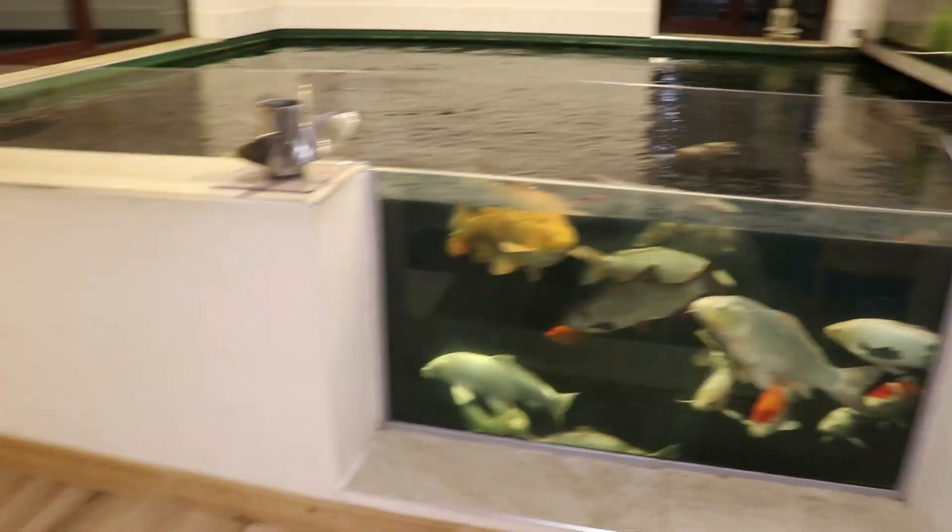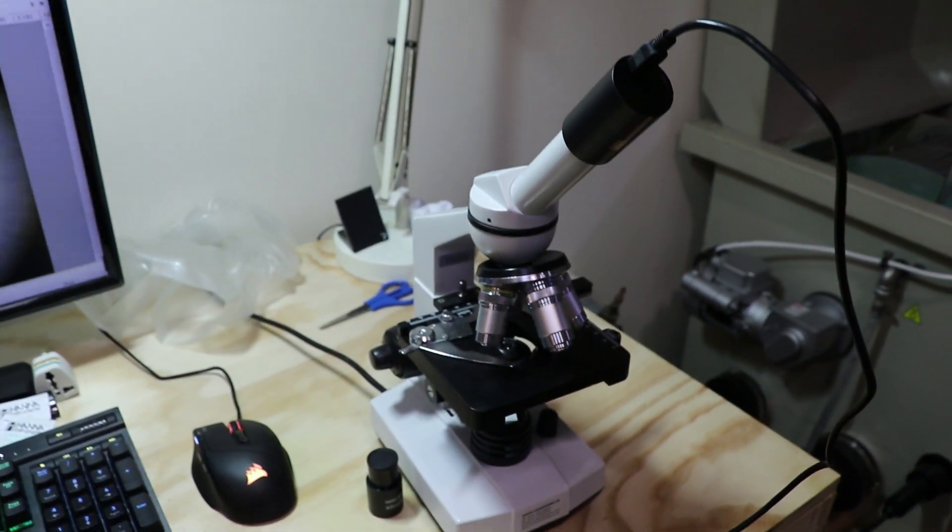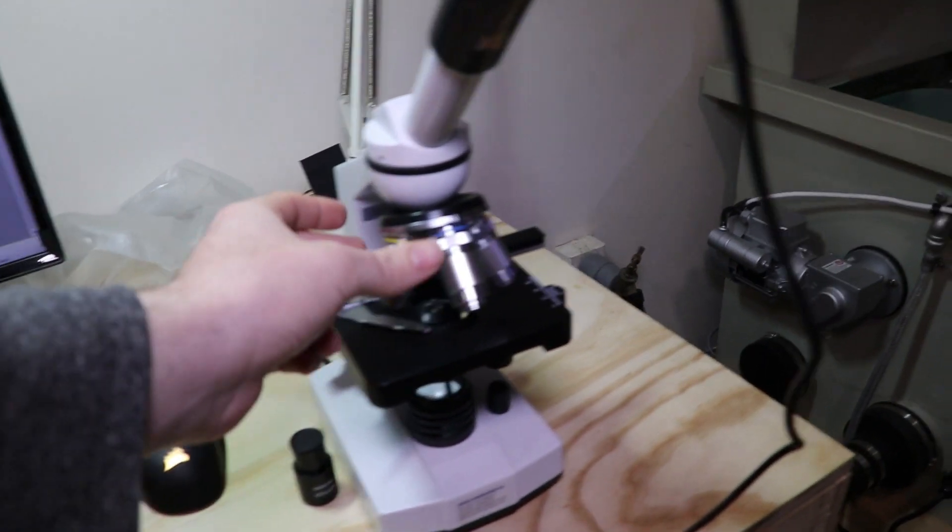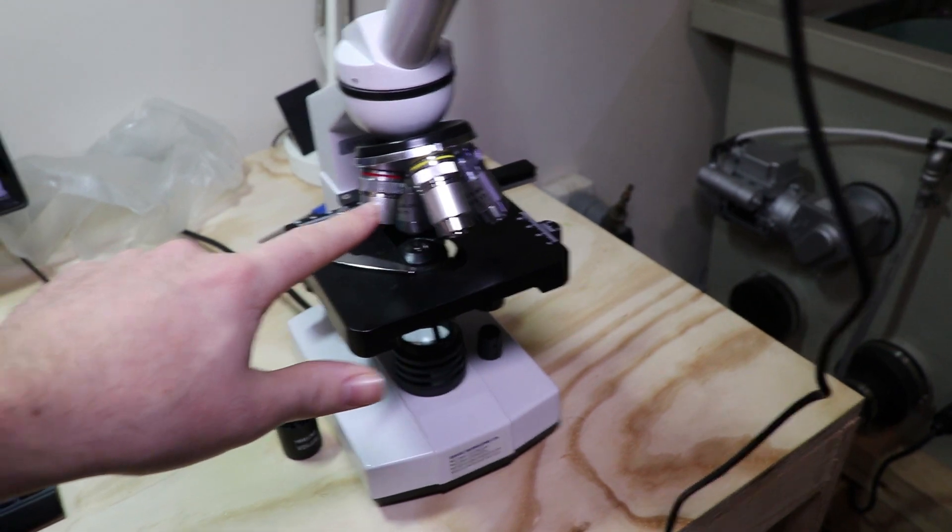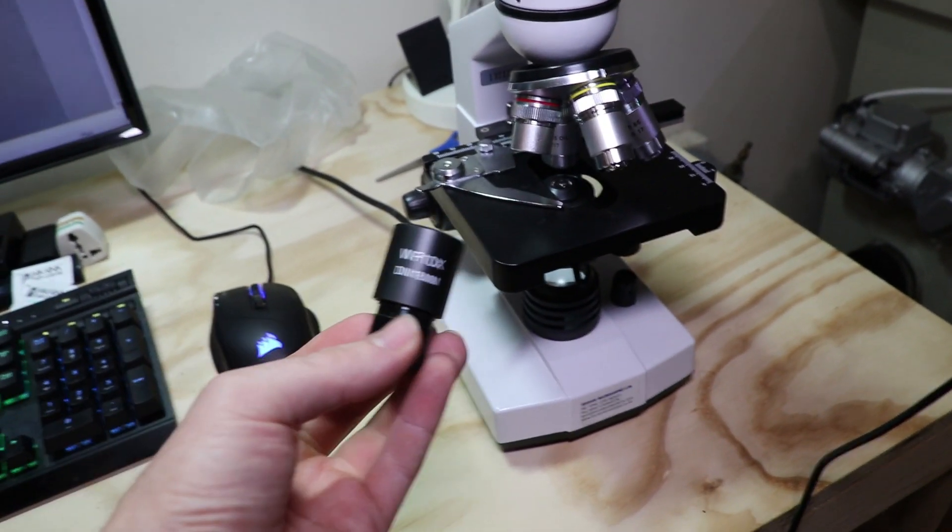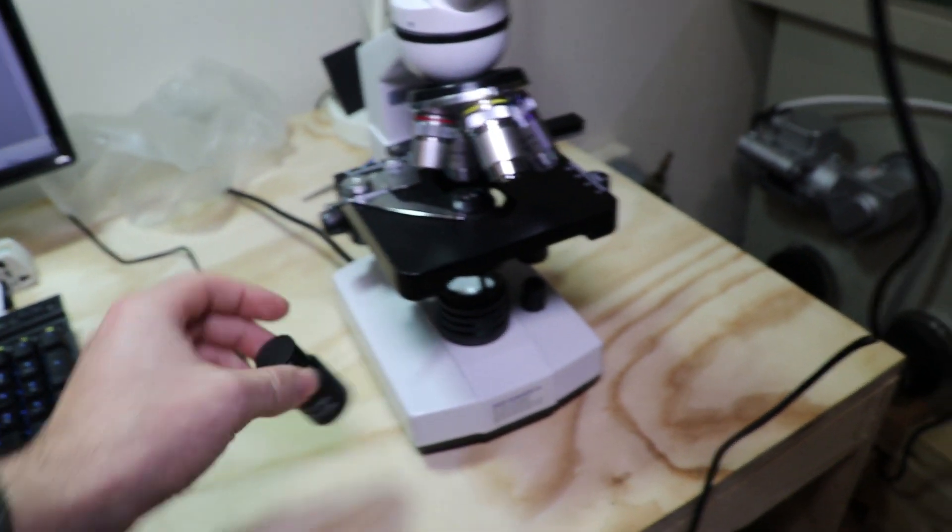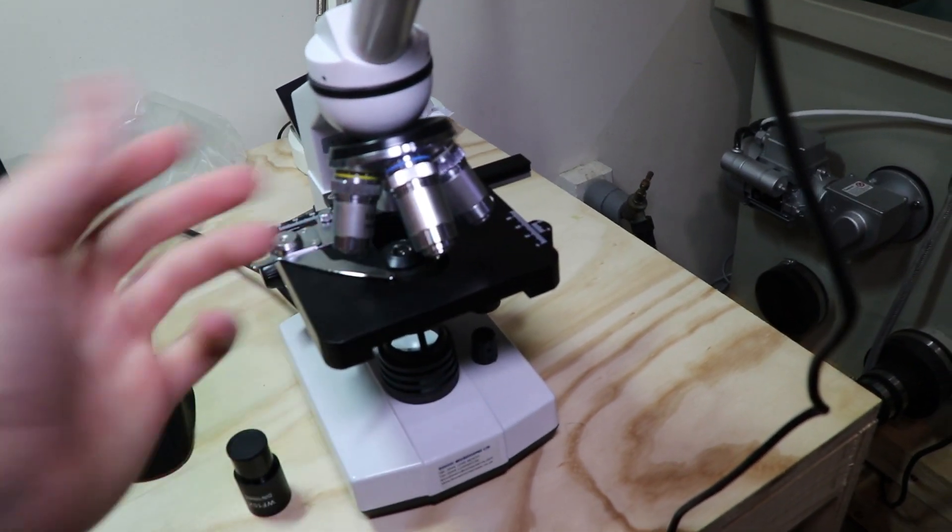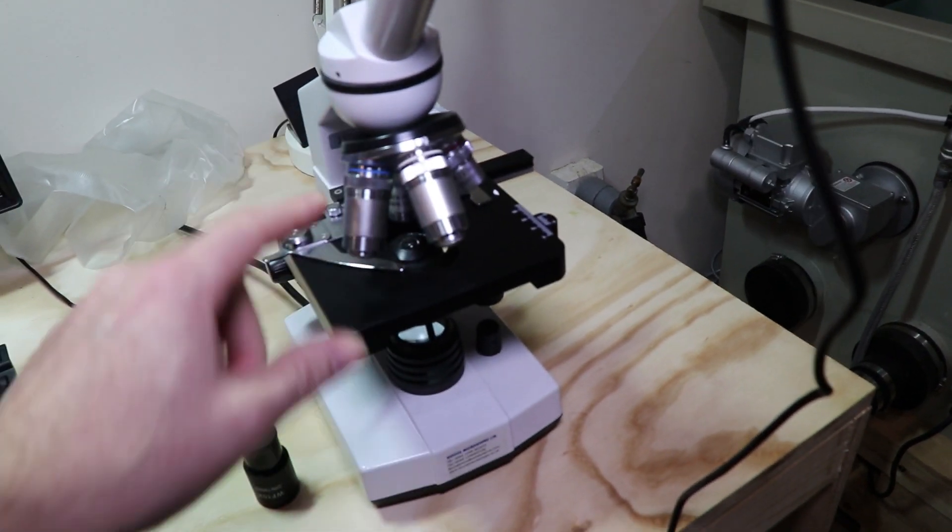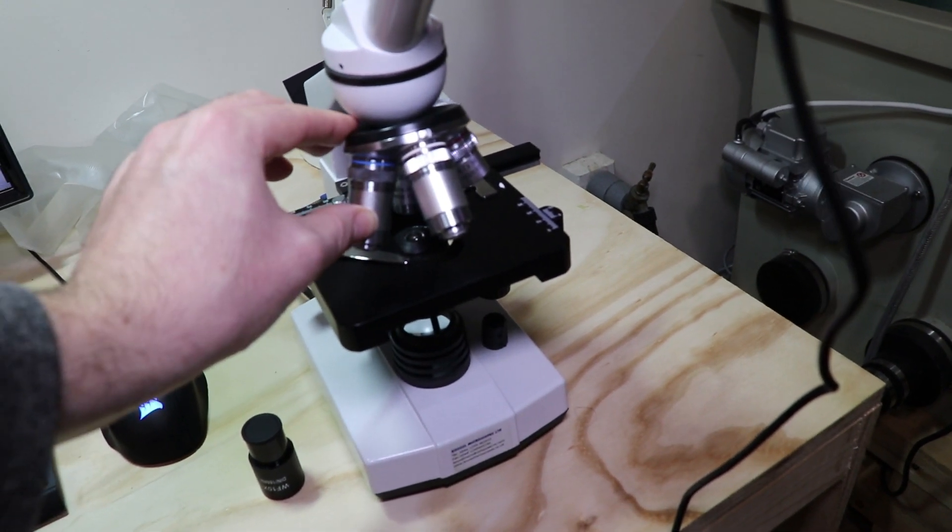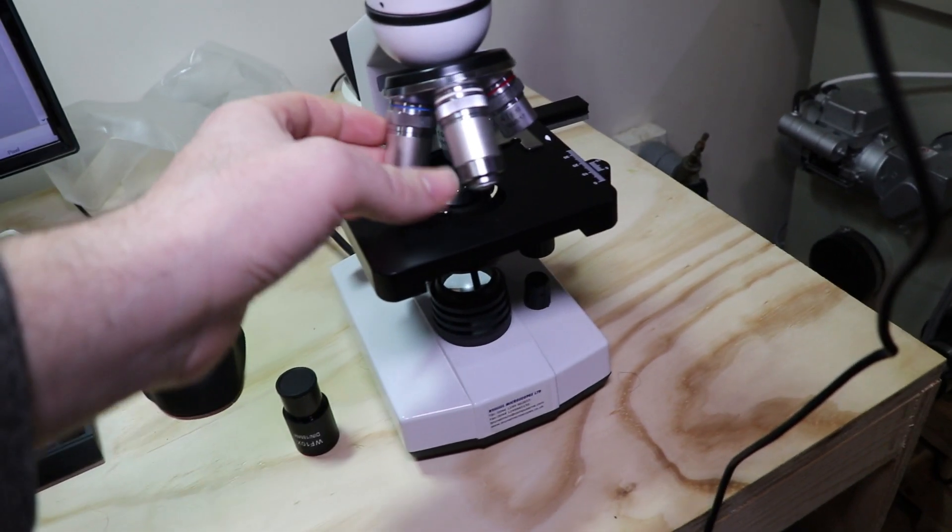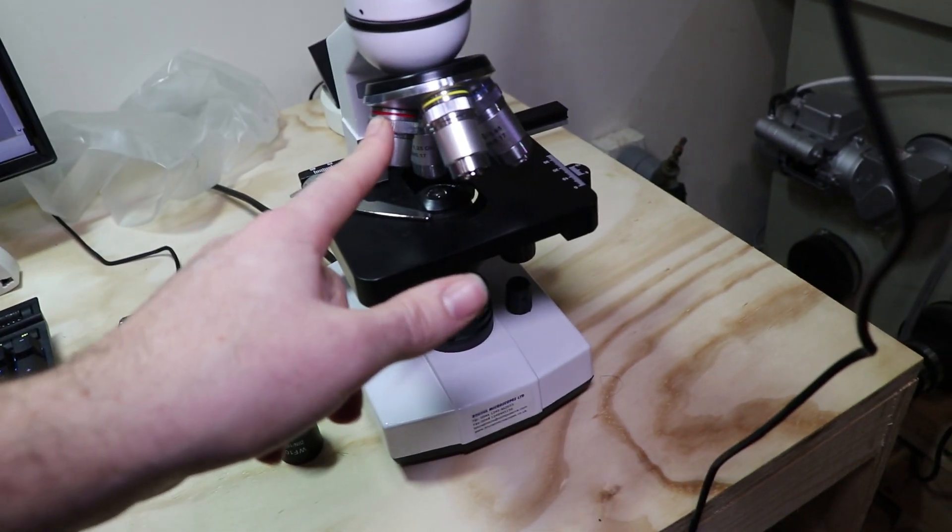So let's have a look at the microscope we're going to be using. Here is the microscope I'm going to be using, it's a Brunel SP22. It's quite a good microscope, I really like using it. It has four options for magnification. The first one is 4x which when compared with a 10x eyepiece makes it 40x magnification. Then the second one is 10x which makes it 100x. The third one would make it 400x, and the fourth one which I never ever use is 1000x in total.